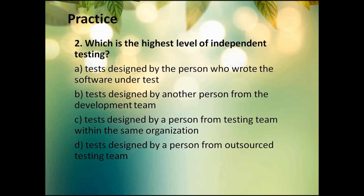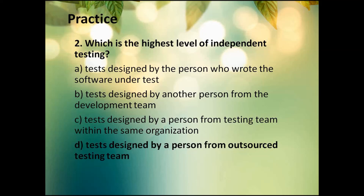Next question: Which is the highest level of independent testing? Option A — test designed by the person who wrote the software — note that this is actually the lowest level. Option B — test designed by another person from the development team. Option C — test designed by a person from a testing team within the same organization. Option D — test designed by a person from an outsourced testing team. The highest level of independent testing is D — testers from an outsourced testing team.